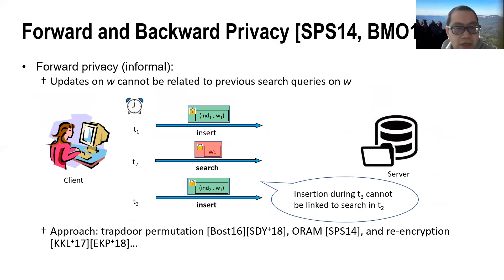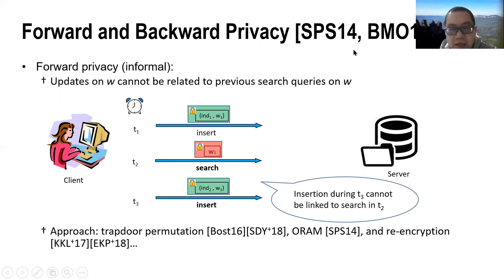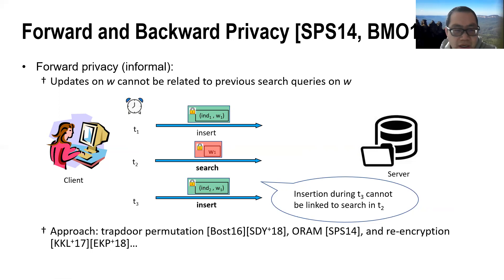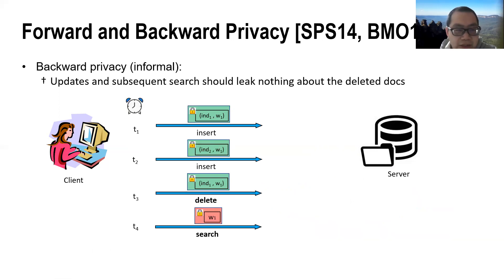To capture the security of dynamic SSE, forward and backward privacy was introduced by Stefanov and others in 2014, and subsequently formalized by Bost and others in 2017. Informally, forward privacy ensures that updates cannot be associated with previous search queries. Since this work is more related to backward privacy, I won't expand on forward privacy here.